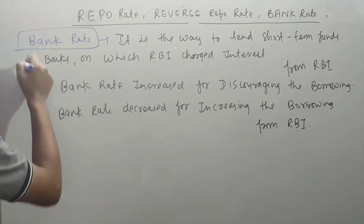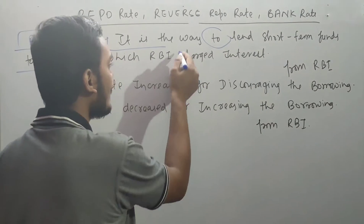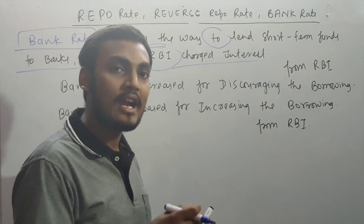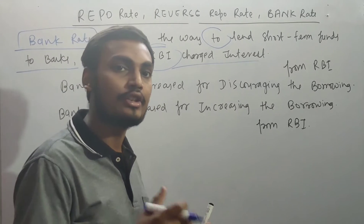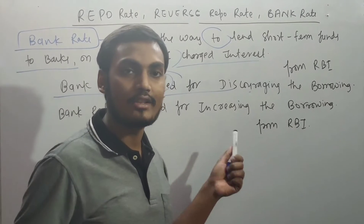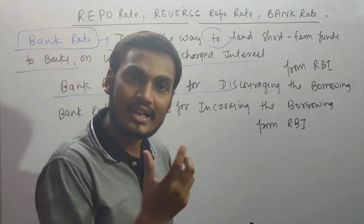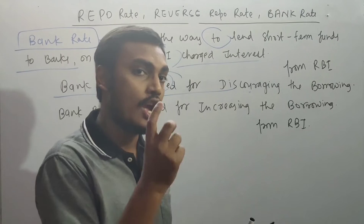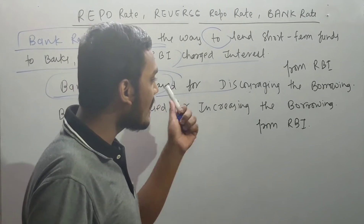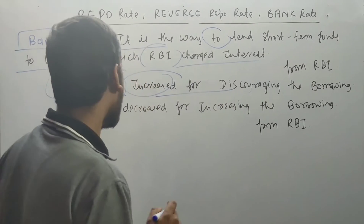Now let's talk about the Bank Rate, which is a small but important concept. The Bank Rate is the rate at which the RBI lends short-term funds to banks, and on which the RBI charges interest. It is a monetary tool used to suck out excess liquidity or increase liquidity. Whenever the RBI thinks banks are borrowing excessively, it increases the Bank Rate to discourage borrowing from the RBI.